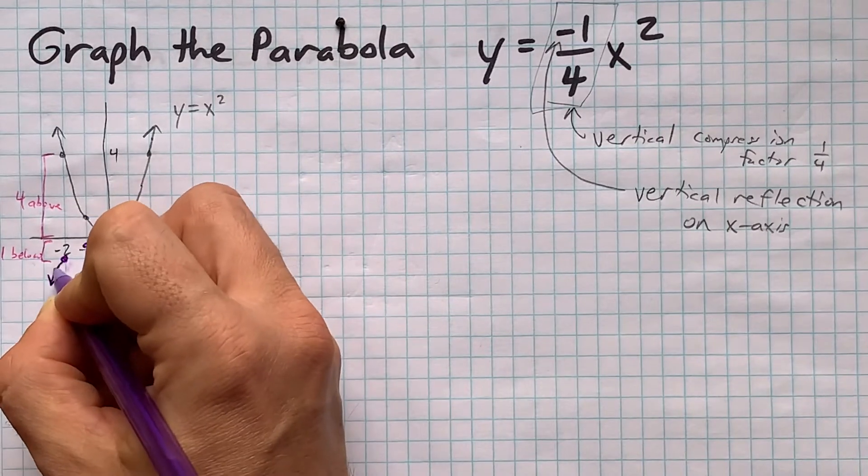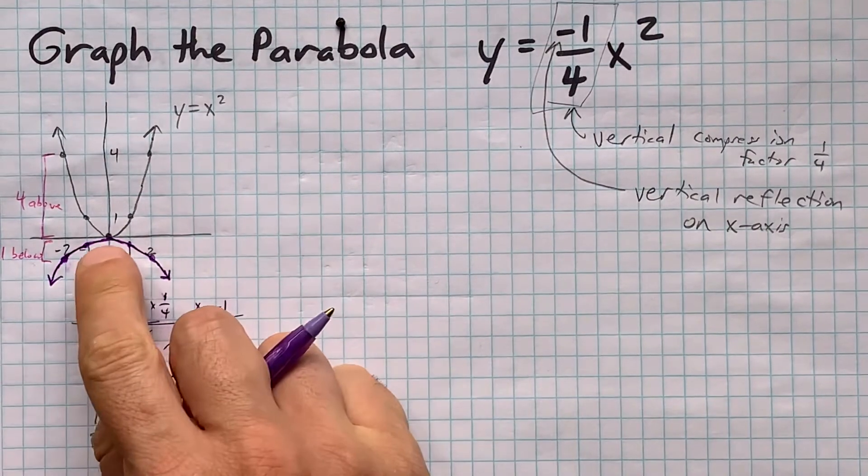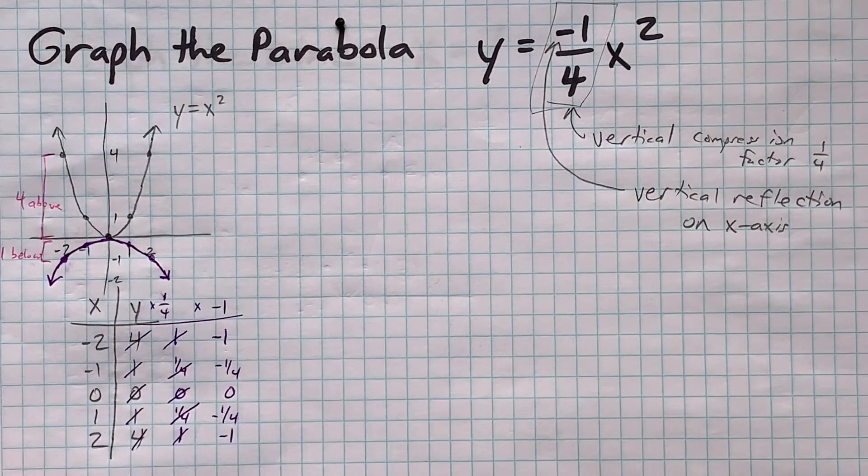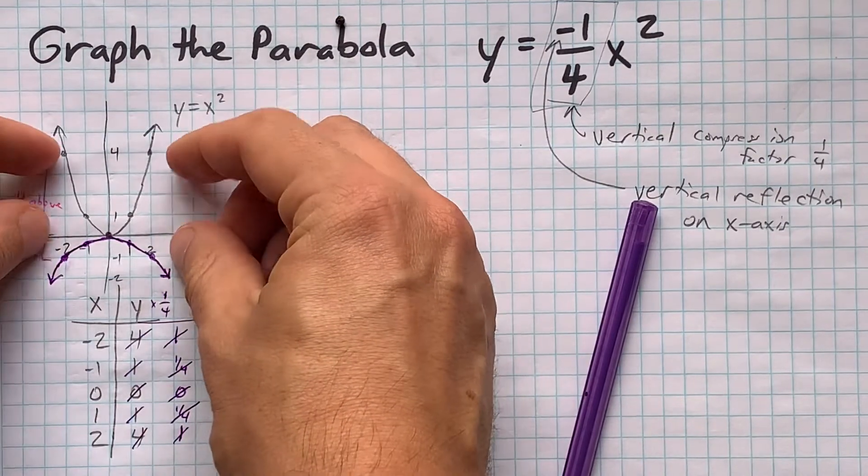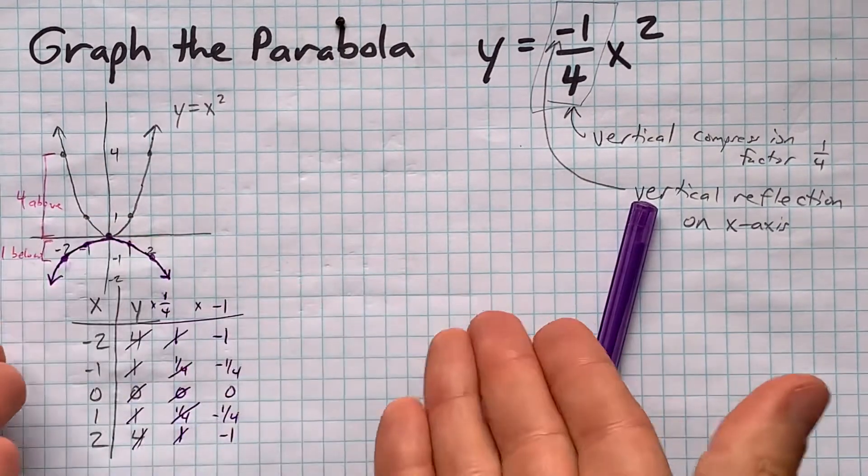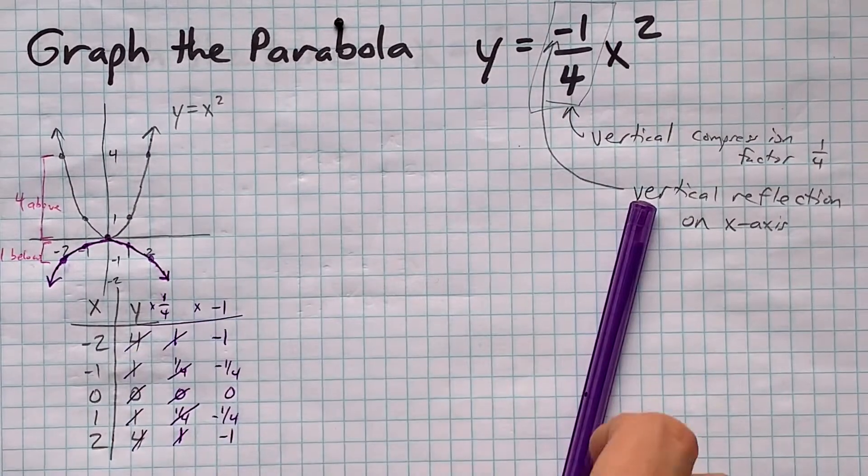So, what I've put in purple here is the transformed version. The vertex is in the same place here, it's 0, 0. But the parabola looks flatter. In fact, it's probably a quarter as tall as it was before, and it's opening down instead of opening up. That's the effect of the negative.